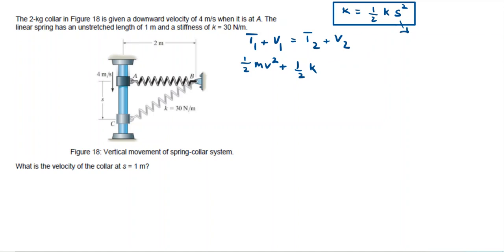I'm not going to make any mistake with the position. I will use the deflection, so I would say half k deflection at 1 squared is equal to half m V2 squared plus half k deflection at 2 squared.